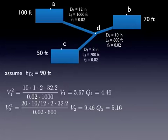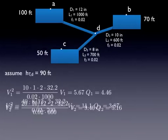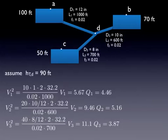In pipe 2, now it's flowing from the junction into reservoir B. So in pipe 2, it's 90 minus 70 or a head drop of 20, which gives us a velocity and a flow rate. And in pipe 3, we've got 90 minus 50, which is a head drop of 40, and that gives us a velocity and a flow rate.